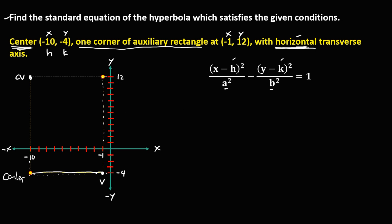To solve for a, recall that a is the distance from the center to the vertex. Counting from the center to the vertex on the graph — 1, 2, 3, 4, 5, 6, 7, 8, 9 — so therefore a is equal to 9.